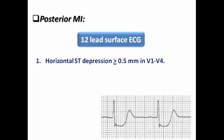On the 12-lead surface ECG, the first criterion is horizontal ST depression more than or equal to 0.5 mm in V1 to V4 — the right precordial leads. Not all four leads need to be involved; it may be V1-V2, V1-V3, or V2-V4. The second important criterion is a tall R wave with RS ratio more than 1. In RV infarction you may see ST depression in V2 with a small R wave, but that is not diagnostic for posterior MI — you need a tall R wave with RS ratio greater than 1.